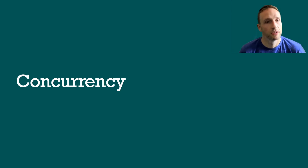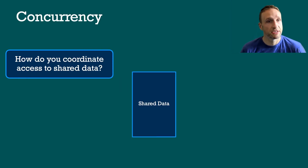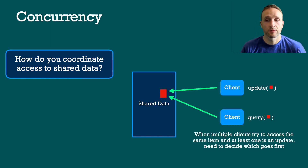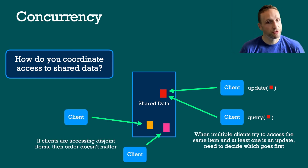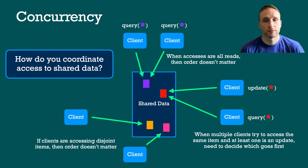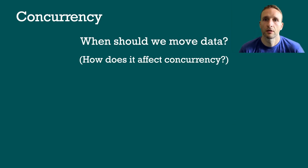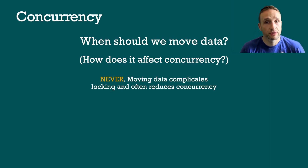So that brings me to my second topic: concurrency. One of the main challenges with concurrency is how do you coordinate access to shared data? A key value store or database has some shared data which multiple clients are trying to access. When they are trying to access the same data item and at least one is performing a write, we need to coordinate that access to maintain consistency and determine the order of operations. However, if multiple clients are accessing disjoint data, or are all performing reads on the same data item, we'd like them to proceed in parallel to improve concurrent performance. From the perspective of concurrency, we generally don't want to move data, because moving data complicates locking and can often contribute to reduced concurrency.